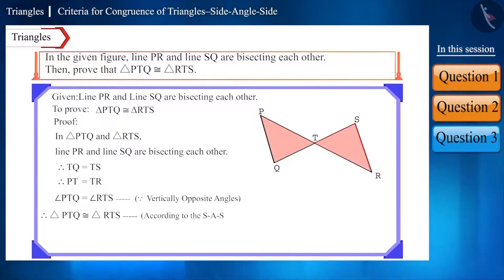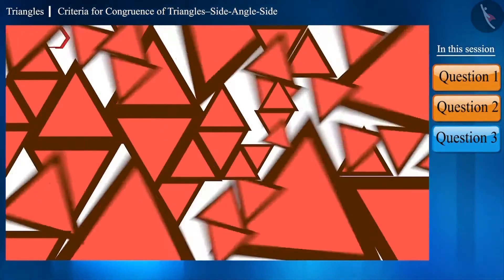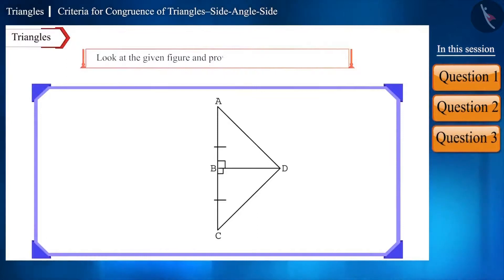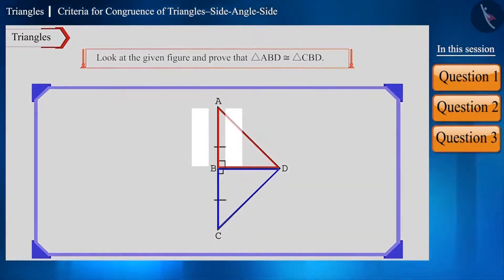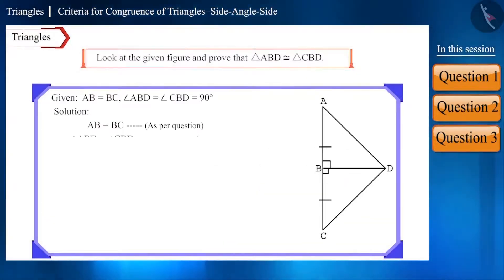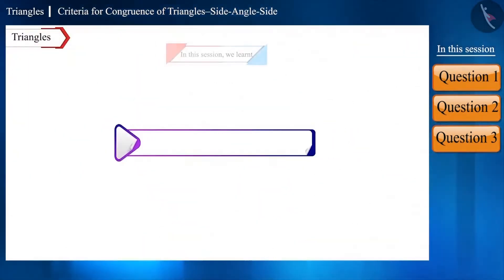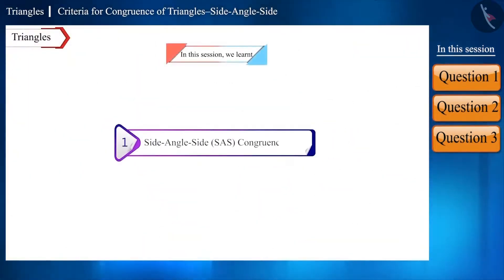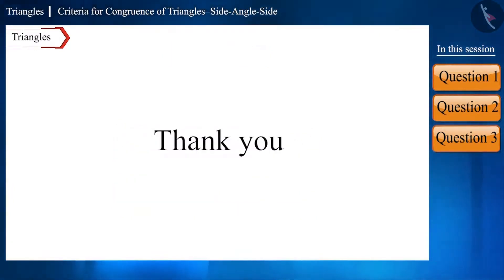You can see here that the names of the two triangles are in the same order as the congruence of their sides and angles. Let's take one more question: look at the given figure and prove that triangle ABD and triangle CBD are congruent. Pause the video and try to solve this question yourself, then check the solution. That's all in today's session — we solved some questions based on the SAS criterion of the congruence of triangles. See you in the next video with some more facts related to this topic. Thank you.